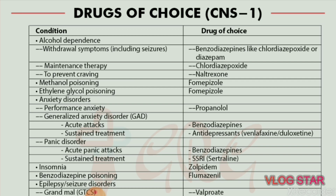Next is methanol poisoning — drug of choice is fomepizole. Ethylene glycol poisoning — drug of choice is also fomepizole.